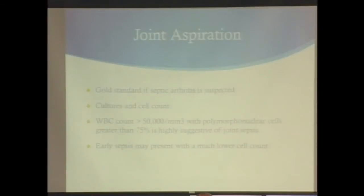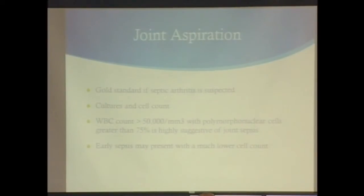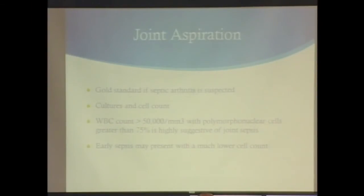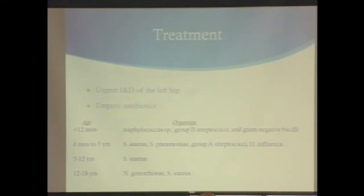Some places have a radiologist drain the hip under ultrasound or CT guidance and send it for labs. Or we take it to the operating room if suspicious enough and start with a joint aspiration. Send for cultures and cell count — stat cell count looking at white blood cell count and type. If greater than 50,000 WBCs, very suspicious for infection. If PMNs greater than 75%, also very suggestive. If it looks turbid or purulent, go ahead and open and drain the hip. Treatment: urgent I&D of the left hip and empiric antibiotics. Staph is most common.